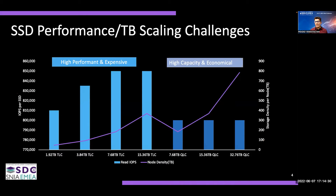Another factor to consider is performance per terabyte scaling. As shown here, capacities have been increasing from 1.9 terabyte to 15.36 terabyte — an 8x capacity increase. However, the IOPS rating only increased from 810K for 1.92TB to 850K, which is only a 40K IOPS increase for an 8x capacity increase.